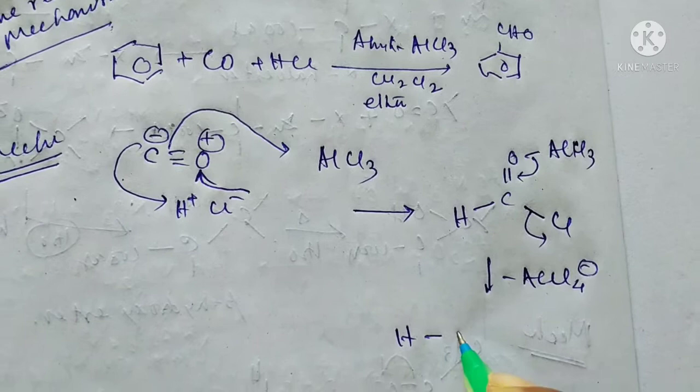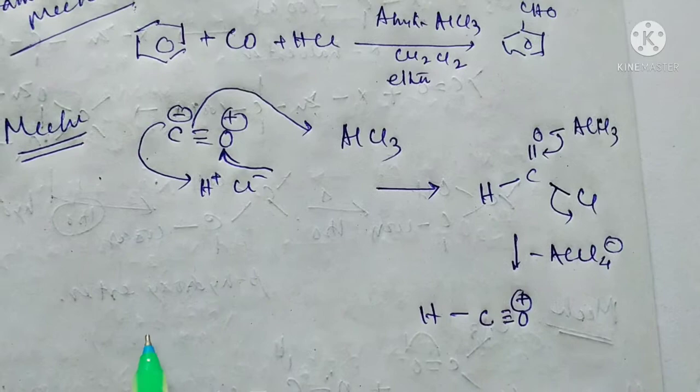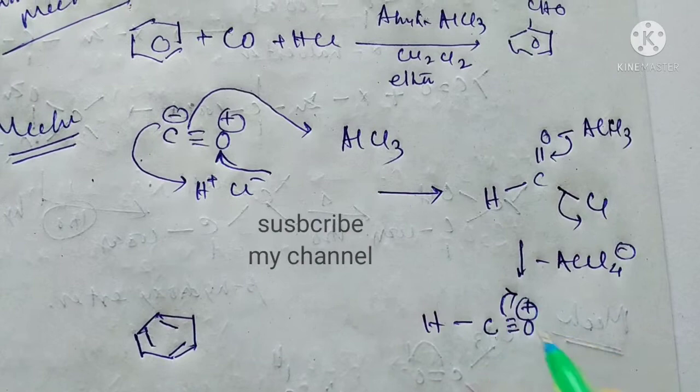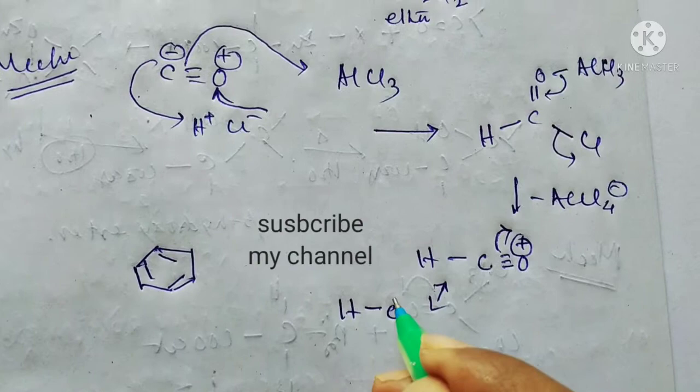Now benzene is present there. You all know that benzene is present in this way. Now here, first this bond will break and next it will form the carbon with plus and then oxygen, and this bond will take up the carbon, which is the carbon attack the C plus carbon.